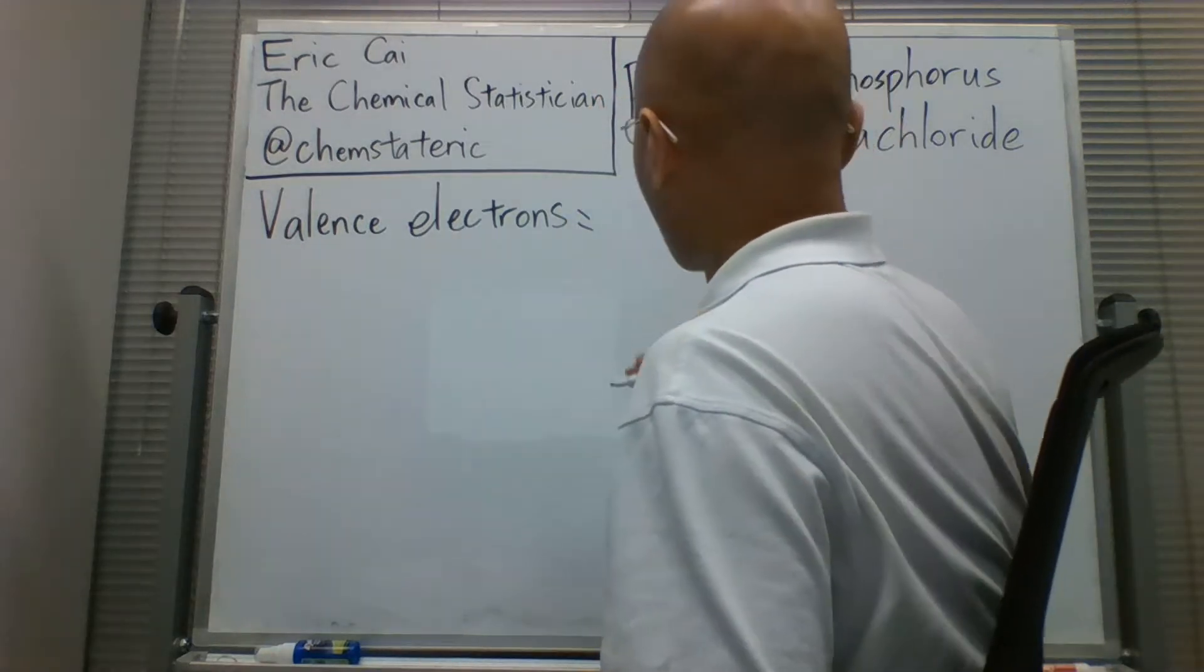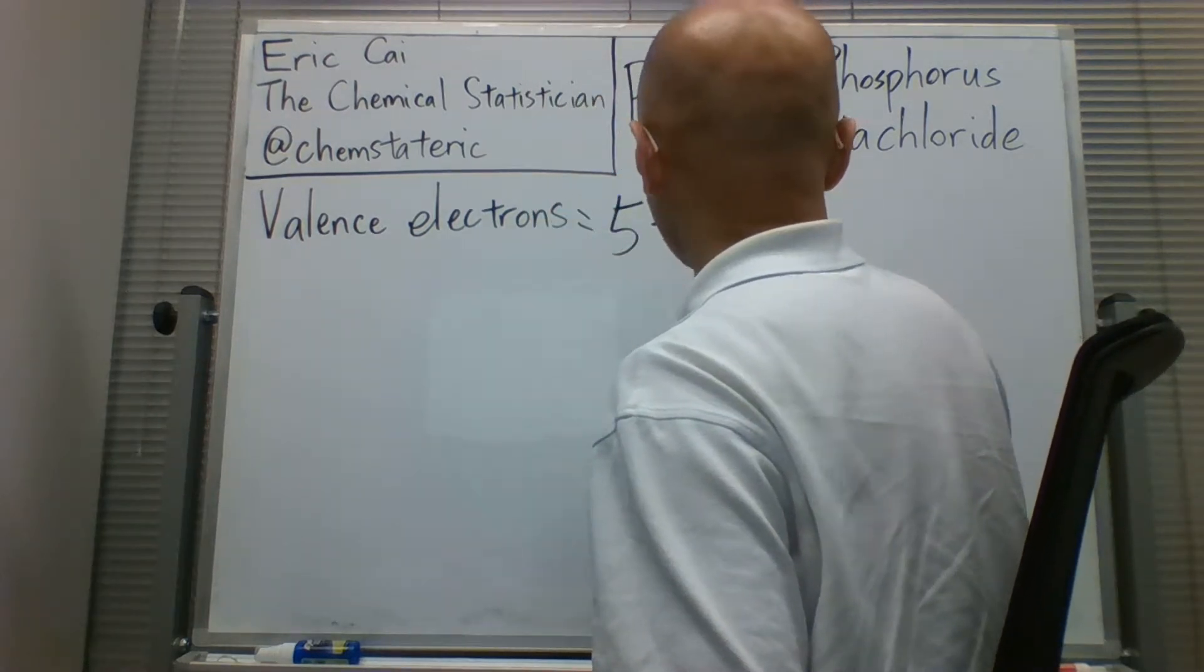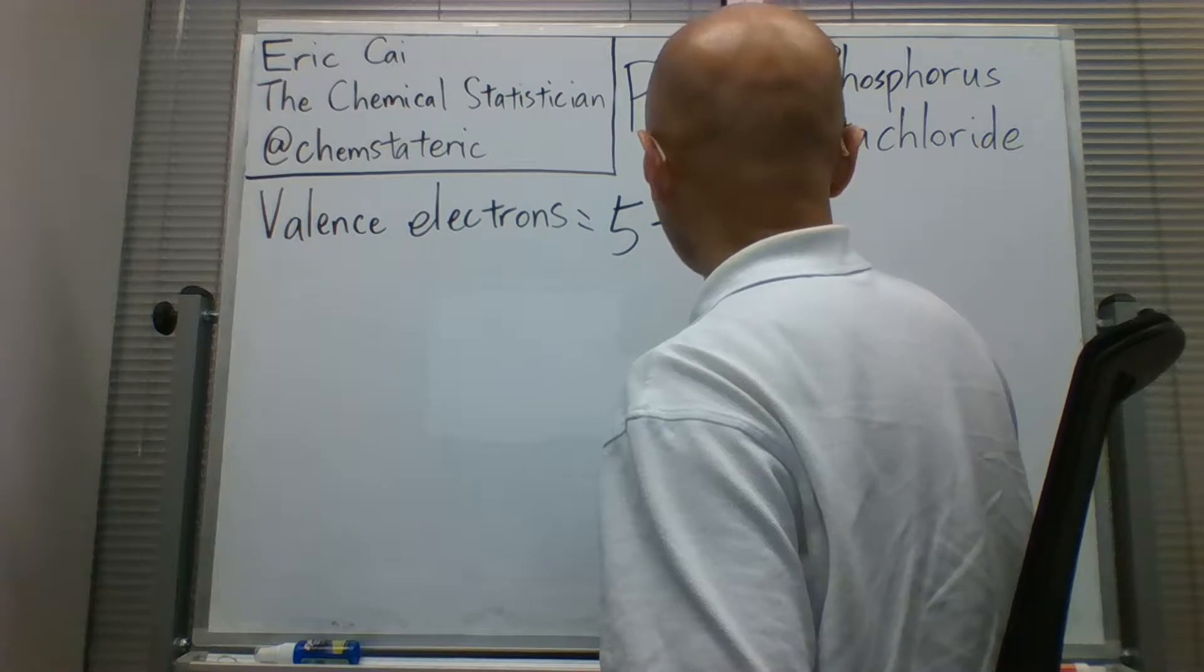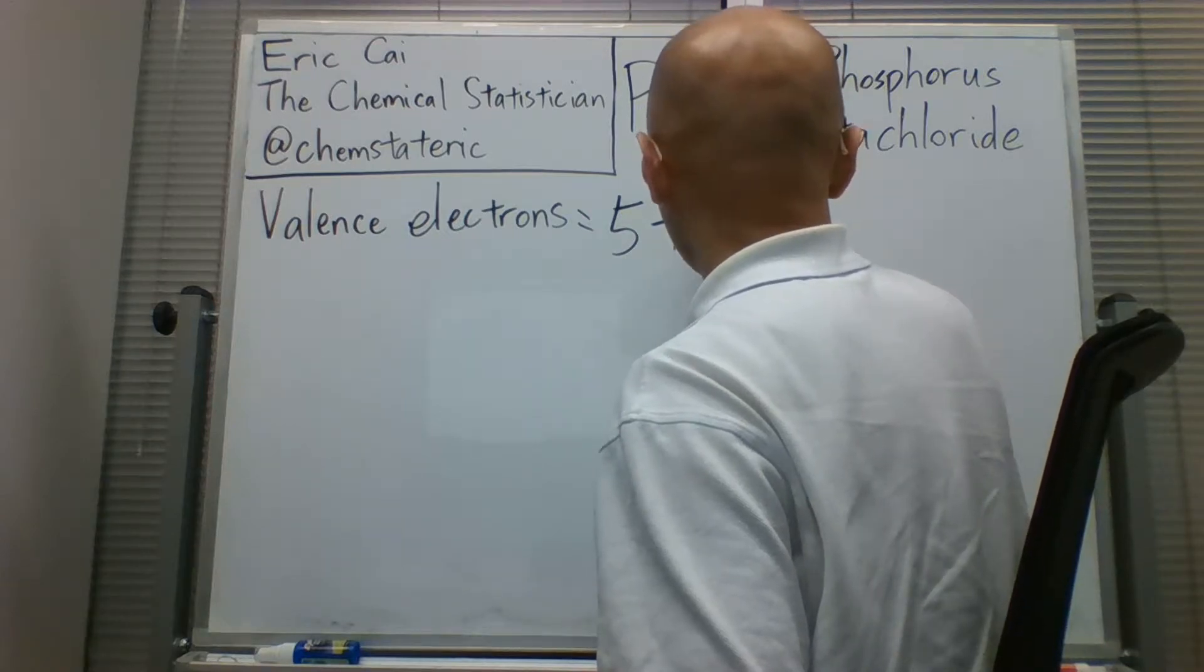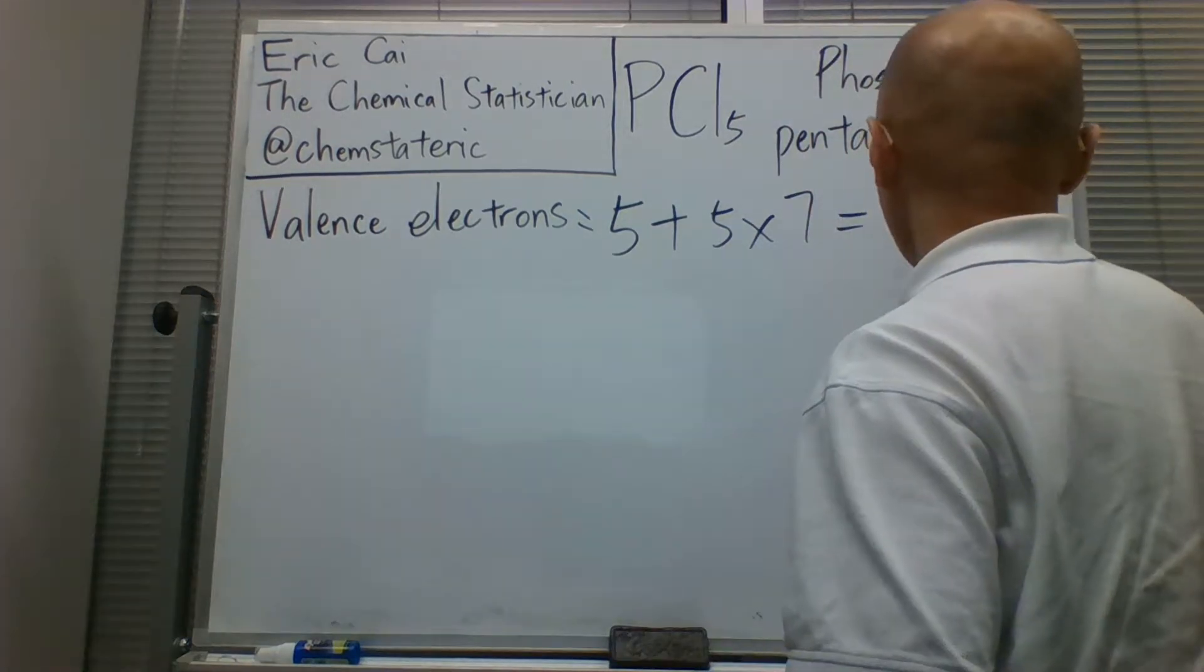We know that phosphorus has five valence electrons, and we know that each of those five chlorines has seven valence electrons. In total, that gives us 40 valence electrons.